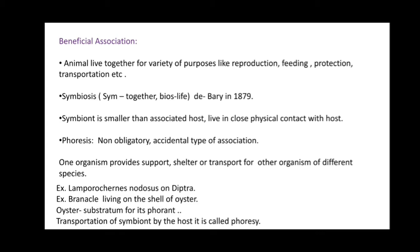Phoresis is a non-obligatory and accidental type of association where one organism provides support, shelter, or transport for another organism of a different species. Example: barnacles living on the shells of oysters. The oyster serves as substratum for the barnacle. Transportation of the symbiont by the host is called phoresis. Animals that cannot travel from one place to another show this type of relation.